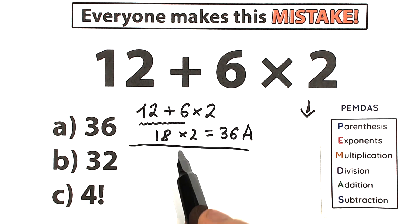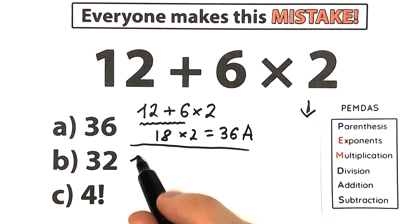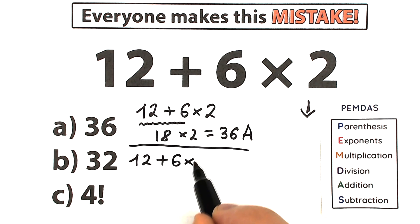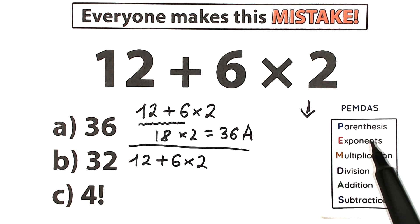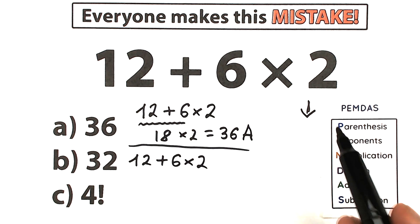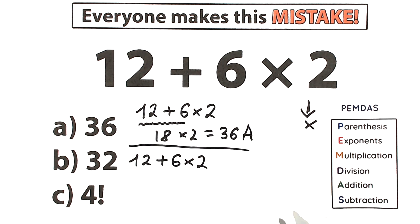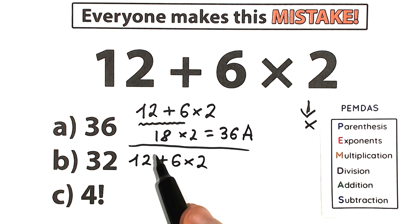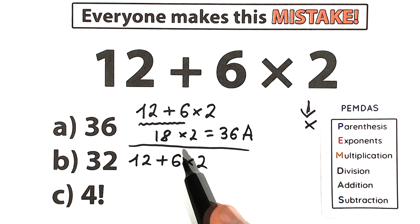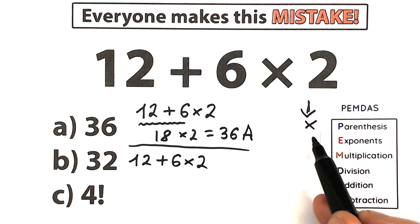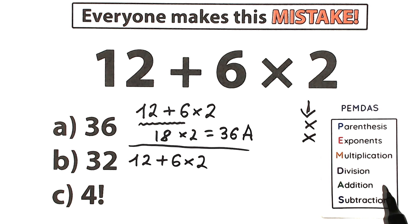So we have 12 plus 6 times 2. Following PEMDAS – first, parentheses: I don't see any parentheses, so we skip that. Next, exponents – any powers, cubes, squares? I don't see any, so we skip that as well.